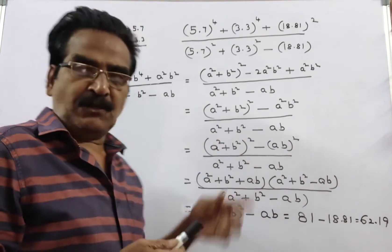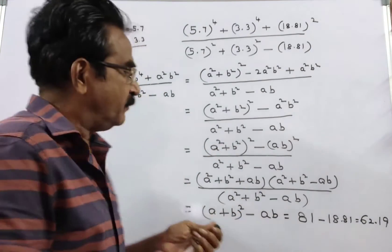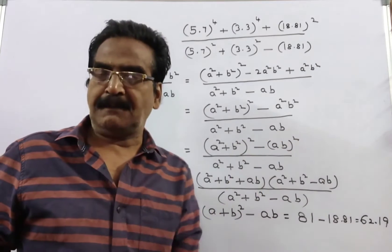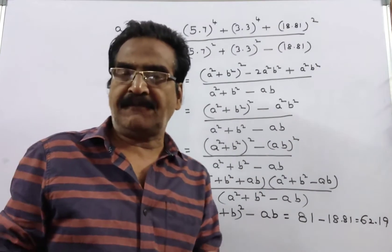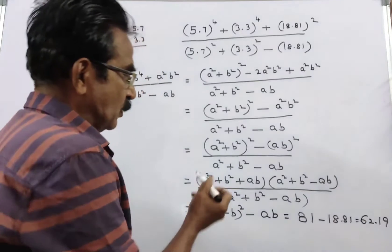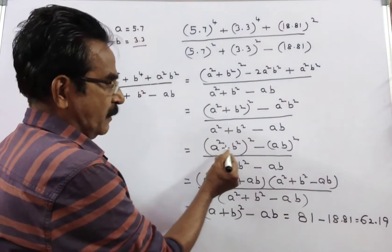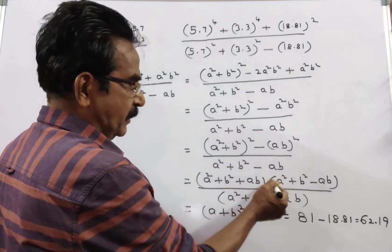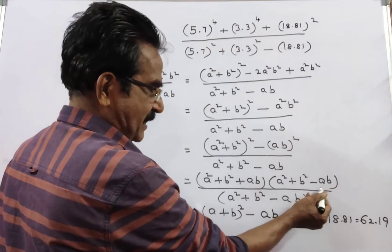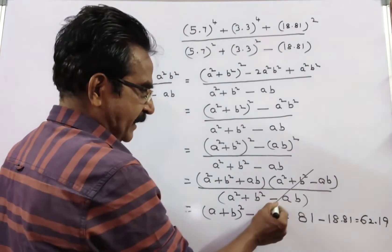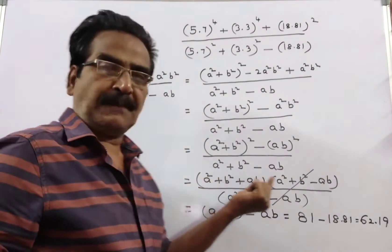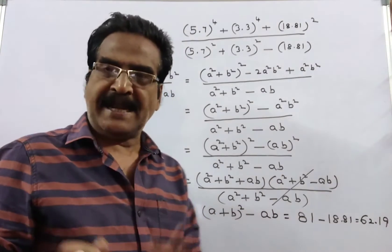Friends, the numerator can be factorized. The numerator is in the form of A squared minus B squared, which can be factorized into A plus B into A minus B. So, A squared plus B squared plus AB, into A squared plus B squared minus AB. These two get cancelled, and A squared plus B squared plus AB remains.